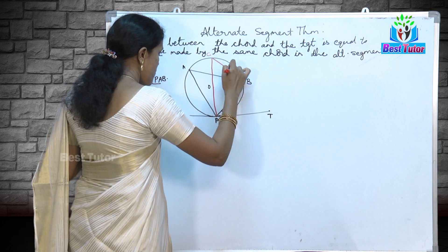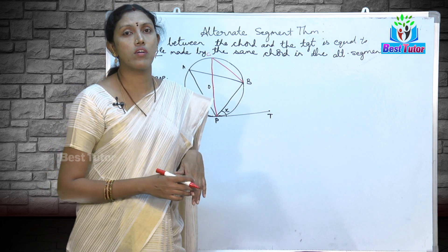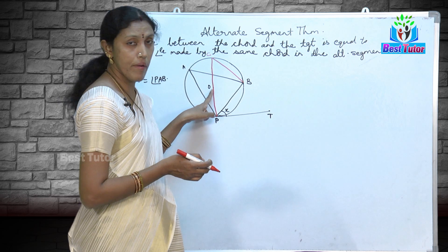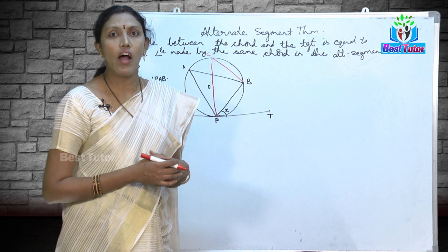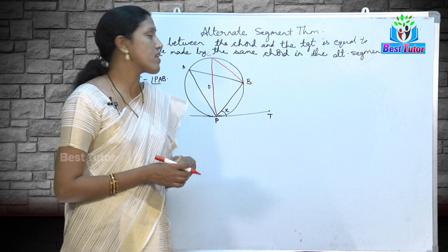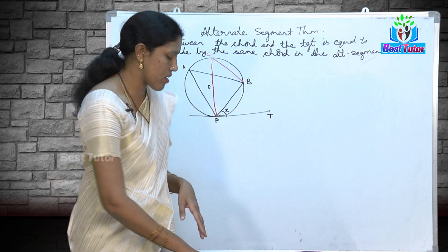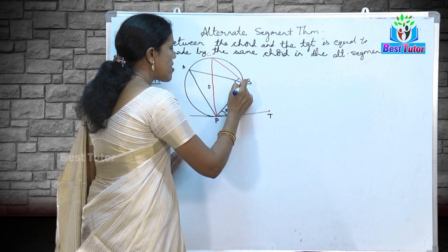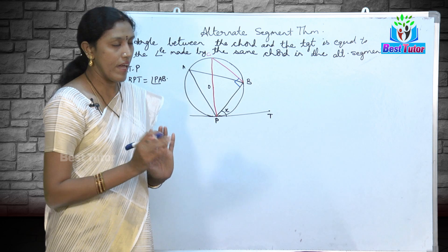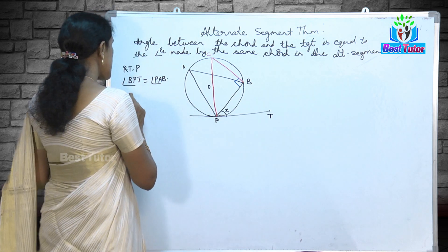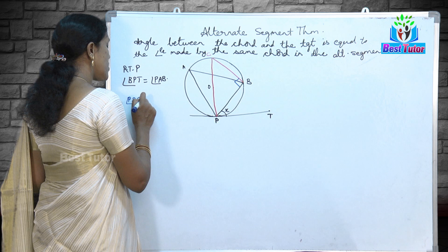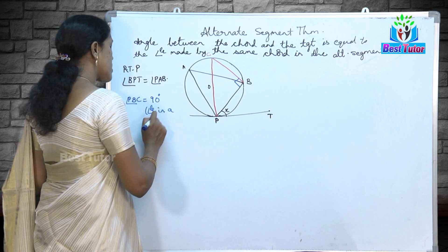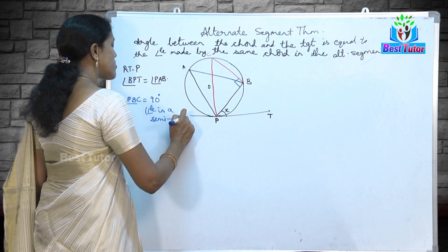I have drawn the diameter and now let me join B and C. We are going to use theorems you have learned earlier. A diameter divides the circle into two semicircles, and the angle in a semicircle is equal to 90 degrees. Therefore, since PC is the diameter, angle PBC is equal to 90 degrees.